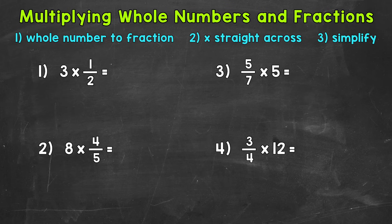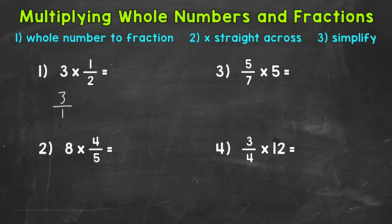So let's jump into number one, where we have three times one-half. Now the first thing that we want to do, we want to rewrite our whole number as a fraction. It's as simple as putting that whole number over one. So for the three, we're going to rewrite this and put it over one. We want a numerator and a denominator — a top and a bottom. Putting that three over one does not change the value of that three or the problem. That fraction has a value of three; it's equivalent to three wholes. Once we have the whole number written as a fraction, we bring down the rest of the problem — the multiplication sign and then the one-half. Now we're ready to multiply straight across.